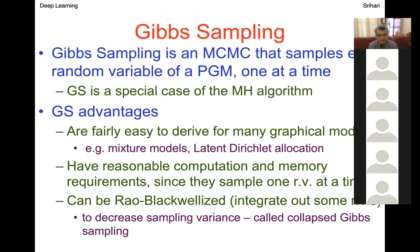Gibbs sampling is an MCMC that samples every random variable for a probabilistic graphical model one at a time. Gibbs sampling is a special case of Metropolis-Hastings. Advantages: it's fairly easy to derive for many graphical models — mixture models, latent Dirichlet allocation, GANs, and other famous machine learning methods. It has reasonable computation and memory requirements since we sample only one random variable at a time.